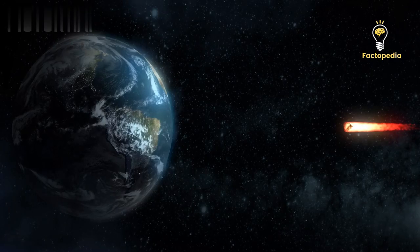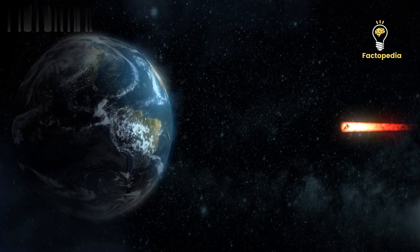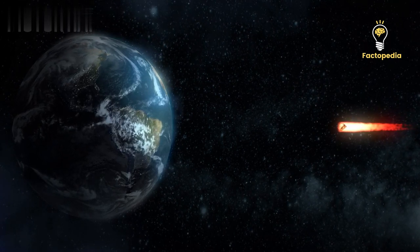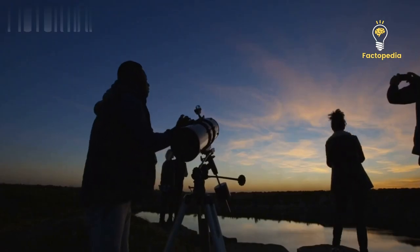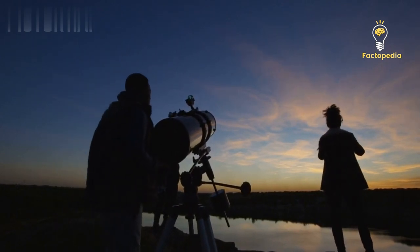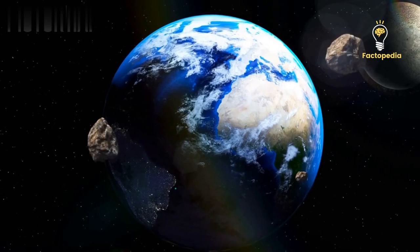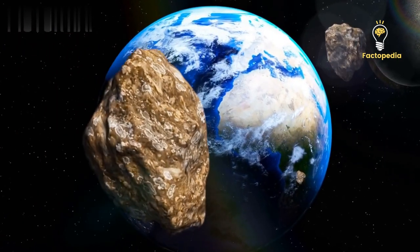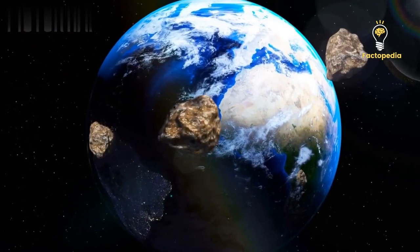The comet is now getting closer to us, and there's a good chance it will be the brightest comet we've seen in a long time. Astronomers found this comet using a robotic system called Atlas in South Africa. Atlas was designed to detect asteroids that could potentially hit Earth, but it also spotted this comet.